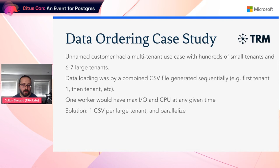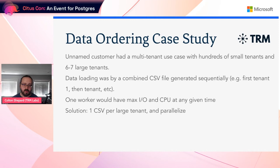To cover a brief case study: back when I was a solutions engineer for Citus, I was working with a customer who had a multi-tenant use case — a few hundred small tenants and six or seven very large tenants several orders of magnitude larger than anyone else. Their internal tool generated a combined CSV file sequentially by tenant ID. We saw that one worker would have maximum IO and CPU at any given time and the others were idle. What we ended up doing was splitting this into a bunch of different CSVs, one per large tenant, and copying them all in at once. That got the problem solved and the load sped up.